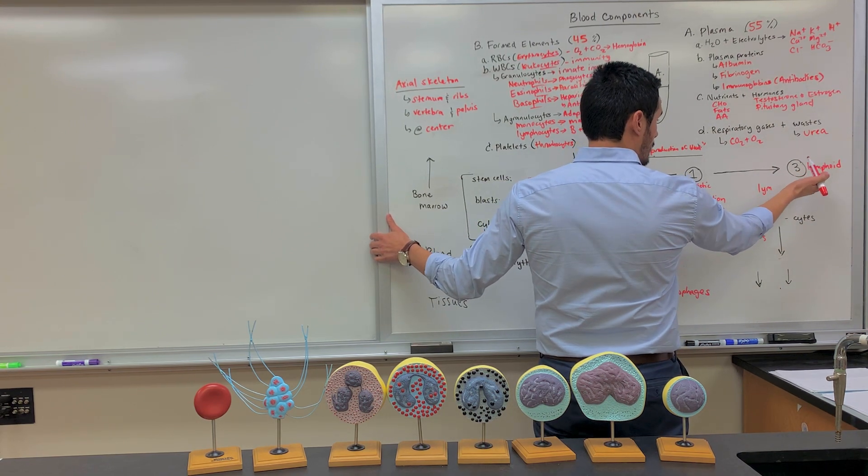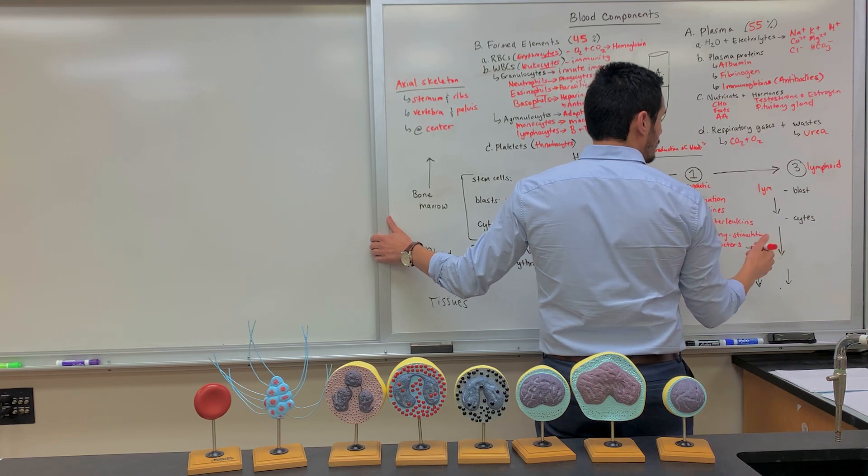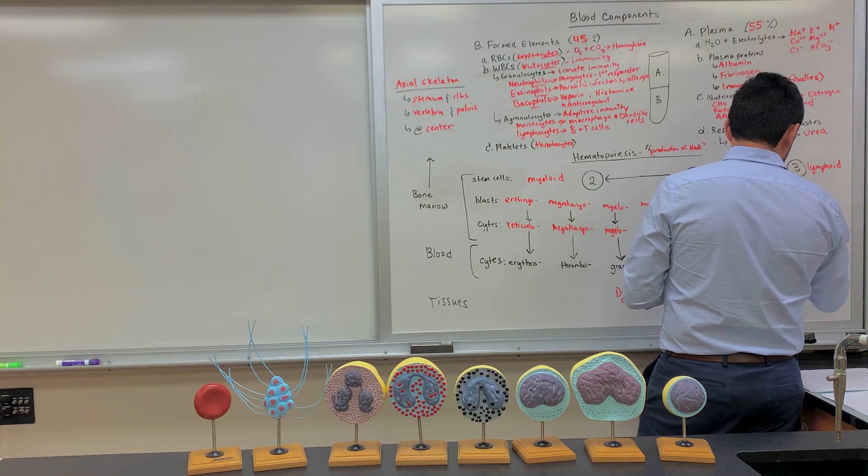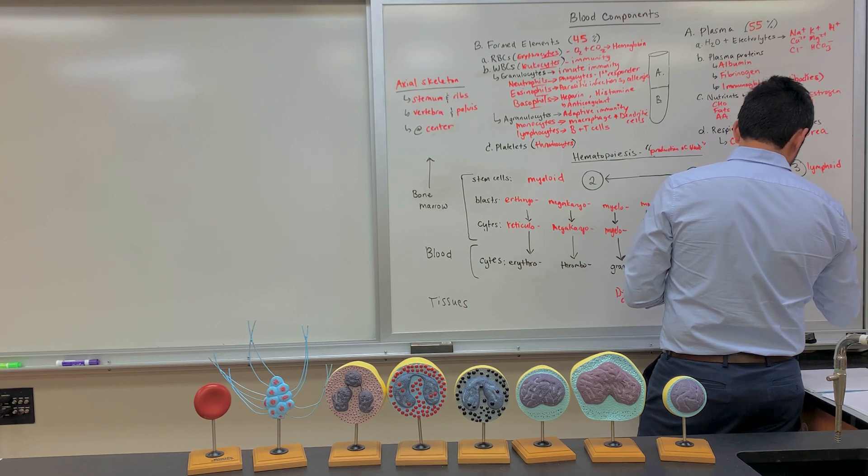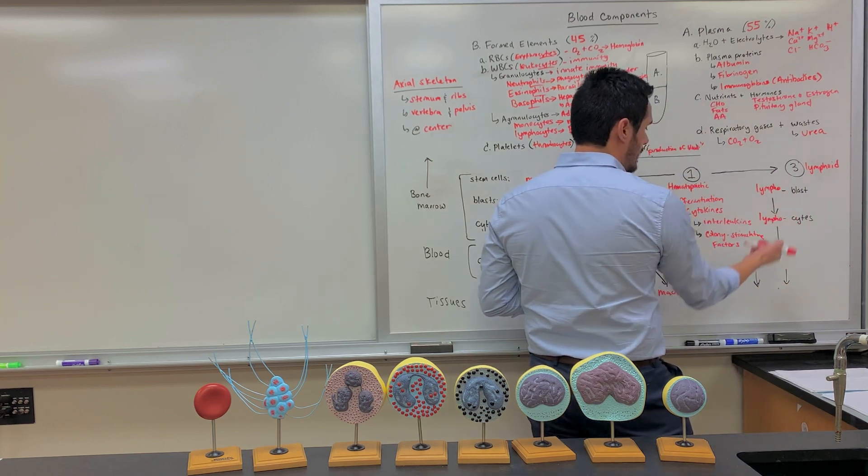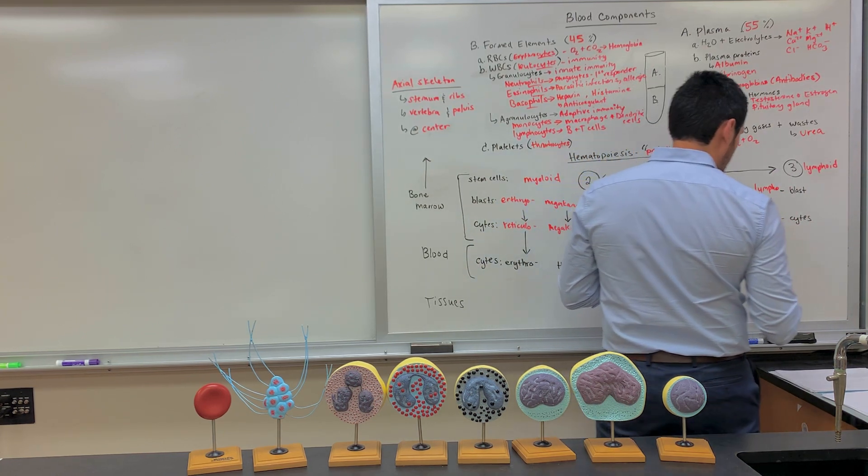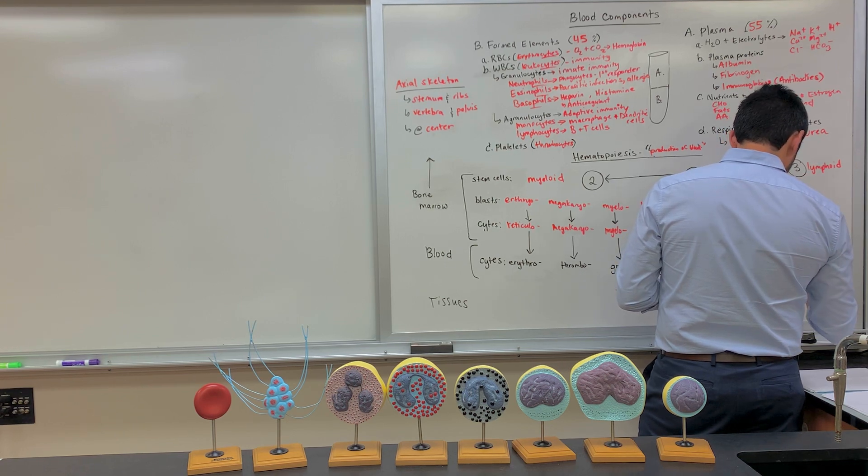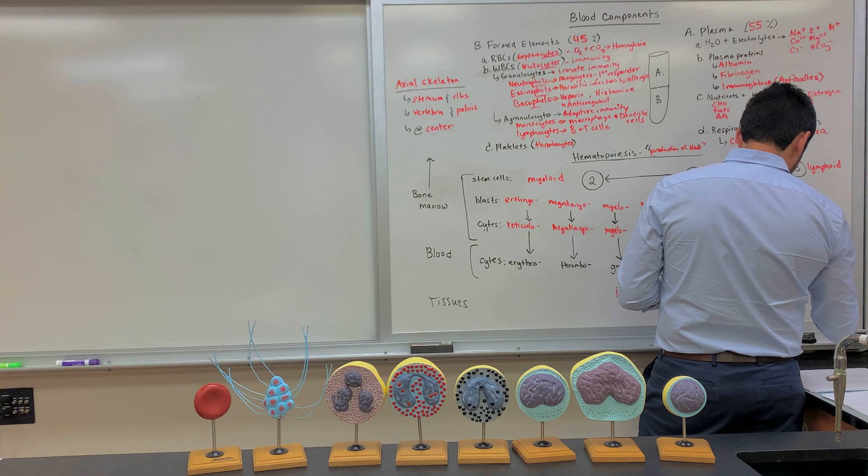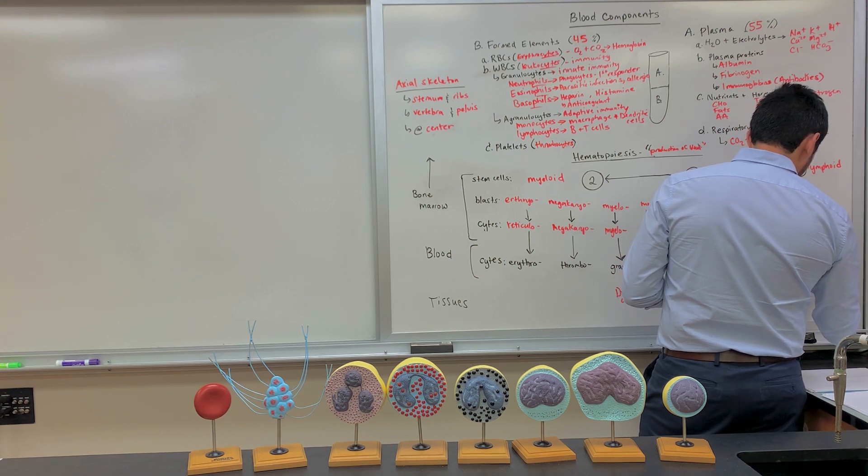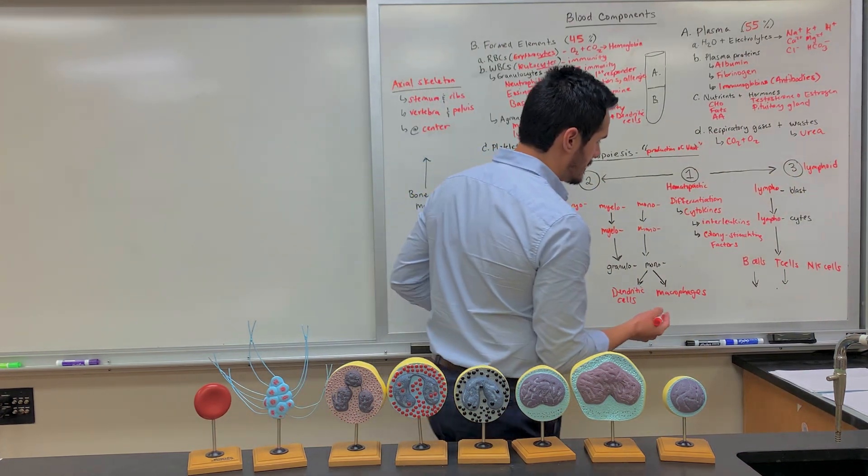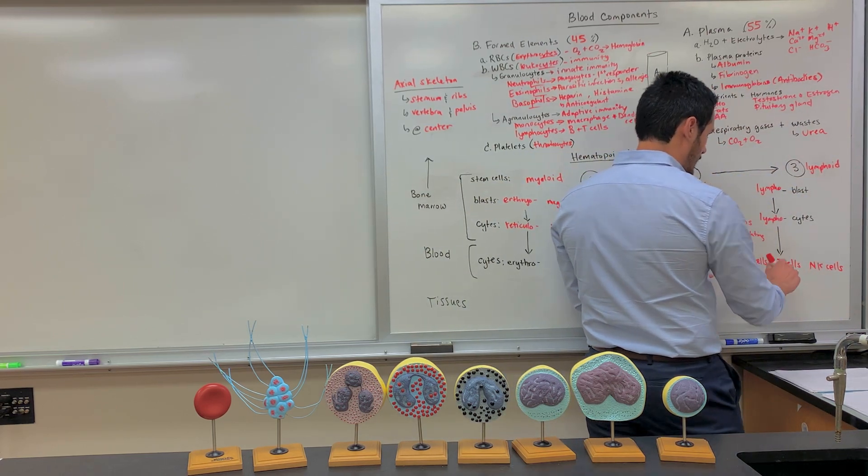And then the lymphoid stem cell, the name doesn't really change here, so it goes from a lymphoblast to a lymphocyte. And these cell lines will further differentiate into B lymphocytes, or we call them B cells. You have T cells, and then you also have natural killer cells. So this is here within the blood, and then once you get to the tissues, some of the specialized cells that are found here.